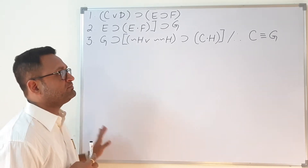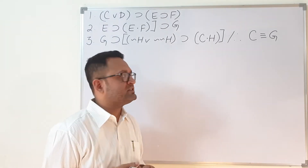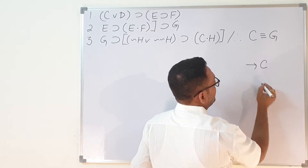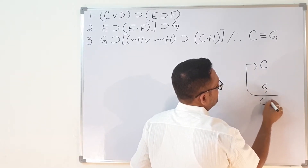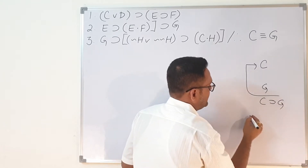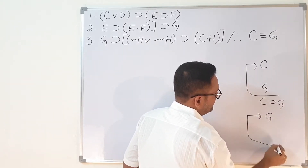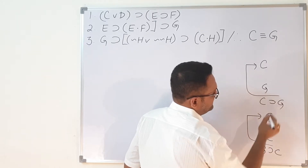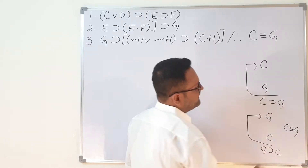The strategy is that we will assume C and derive G, giving us C implies G. Then we will assume G and create C, giving us G implies C. Then we conjoin them so C triple bar G comes out. This is the idea of solving this question, something which has been explained before.